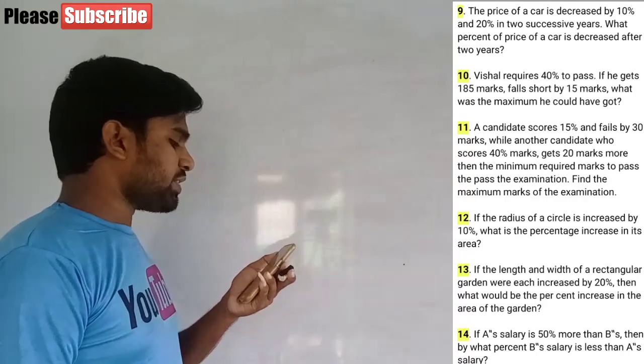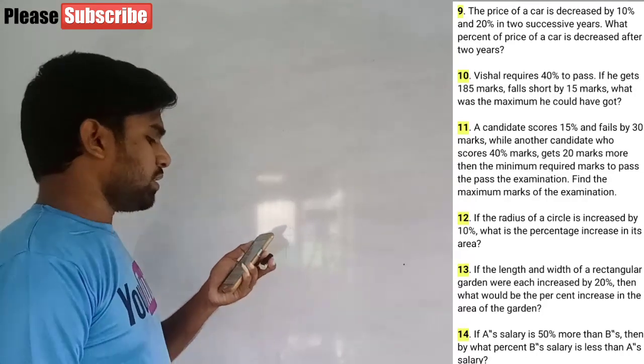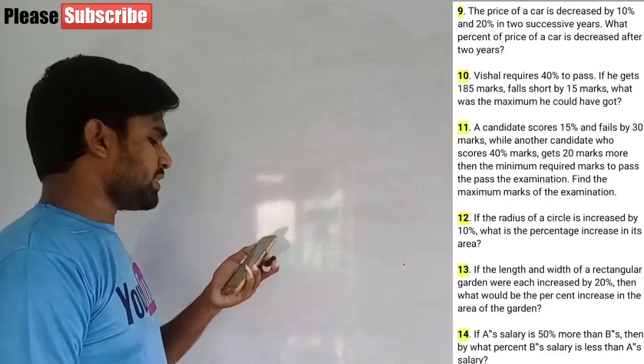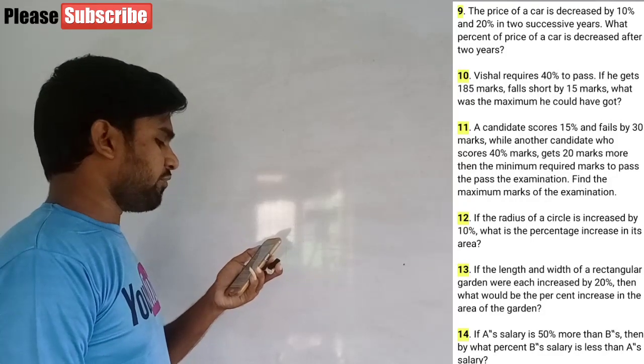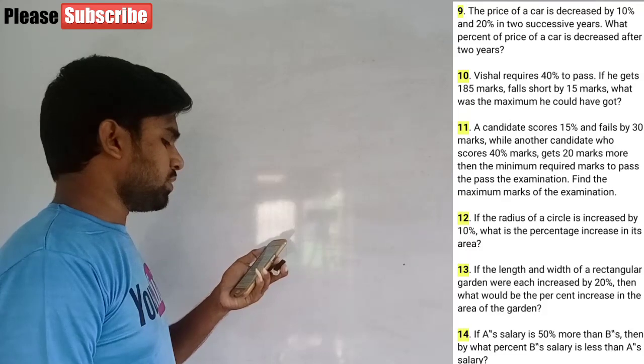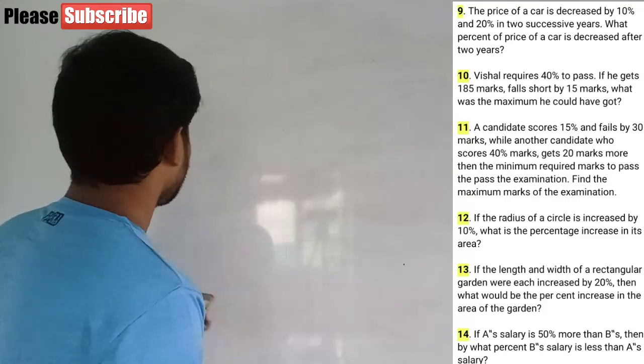Question 10: Vishal requires 40% to pass. He gets 185 marks and falls short by 15 marks. What is the maximum marks he could have got?